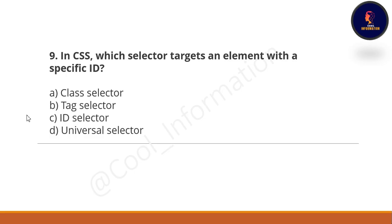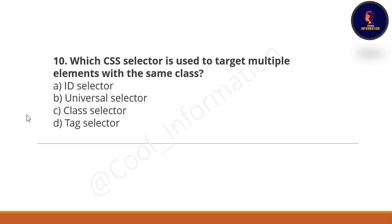Question 9: In CSS, which selector targets an element with a specific ID? Option A: class selector. Option B: tag selector. Option C: ID selector. Option D: universal selector. The correct option is option C, ID selector.